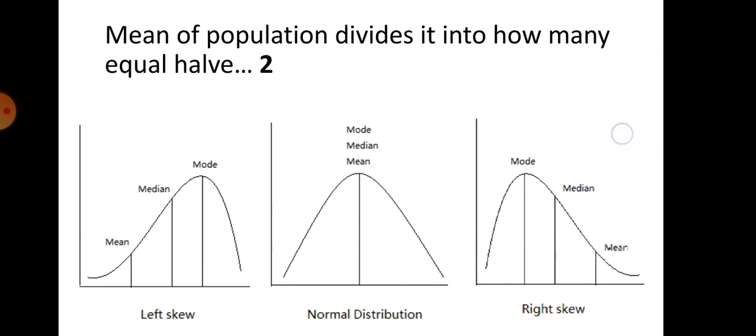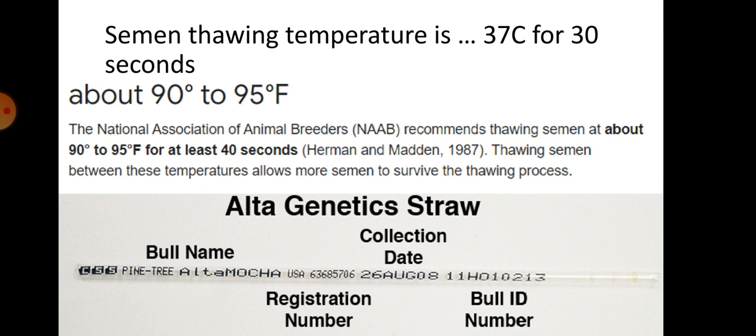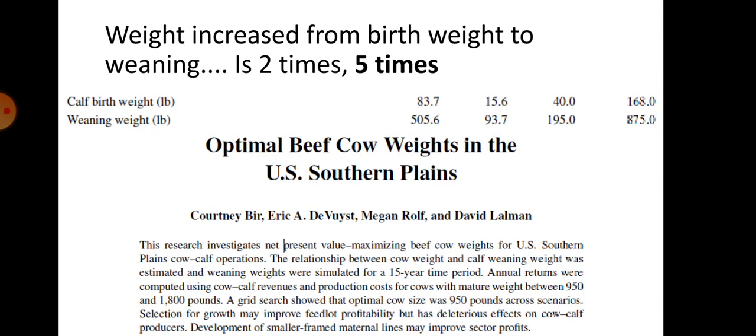Semen thawing temperature is 37 degrees centigrade for 30 seconds, which is approximately 90 to 95 degrees Fahrenheit. The information that should be mentioned on an AI semen straw includes the bull name, registration number, collection date, and bull ID number.